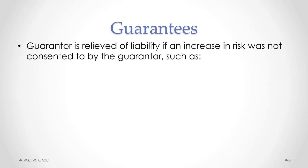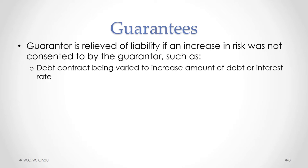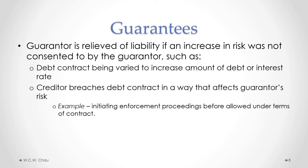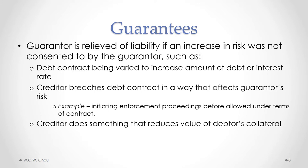A guarantor can be relieved of liability under a defaulted loan if they can show there was an increase in the risk of default that was not consented to by the guarantor. This could include situations such as the loan contract being varied to increase the amount of debt or the interest rate — if that increase was not consented to by the guarantor, they would not be liable. Another situation is where the creditor breaches the debt contract in a way that affects the guarantor's risk, such as initiating enforcement proceedings before they are actually allowed to under the terms of the contract.